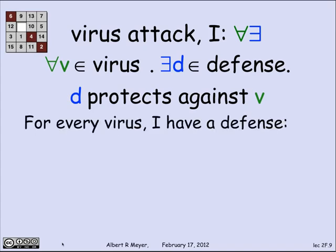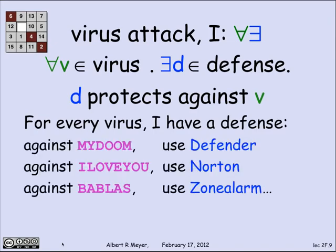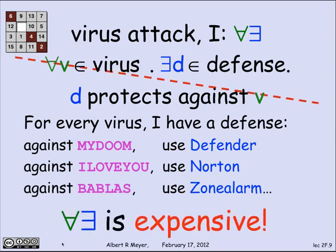So each virus, I have a defense for. So an example would be—these are, by the way, dated viruses, but that's when the slides were made—so against the MyDoom virus, you could use Defender, a Microsoft Defender. Against the I Love You virus, you could use Norton. Against the Bobliss virus, you could use Zone Alarm. Well, is that what we want? It's expensive. It means that for every different virus, I need a different defense. I have to spend a fortune on software.